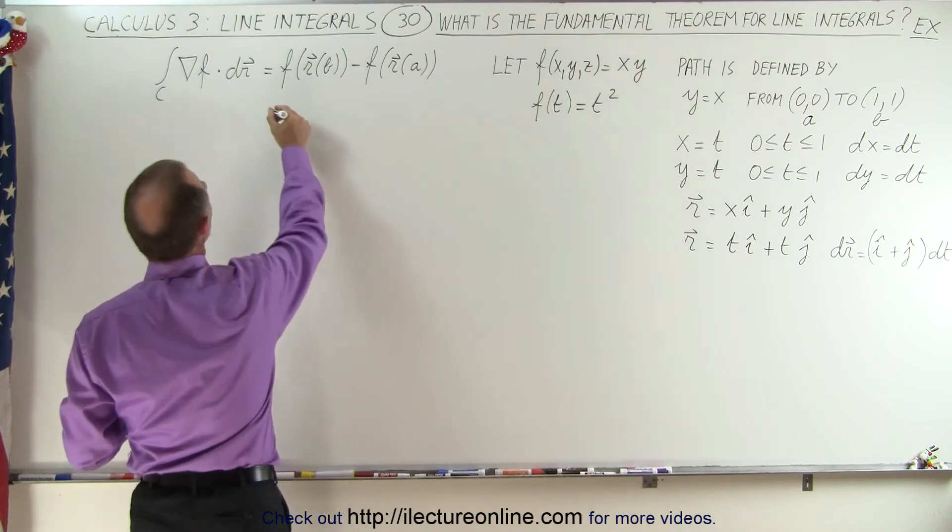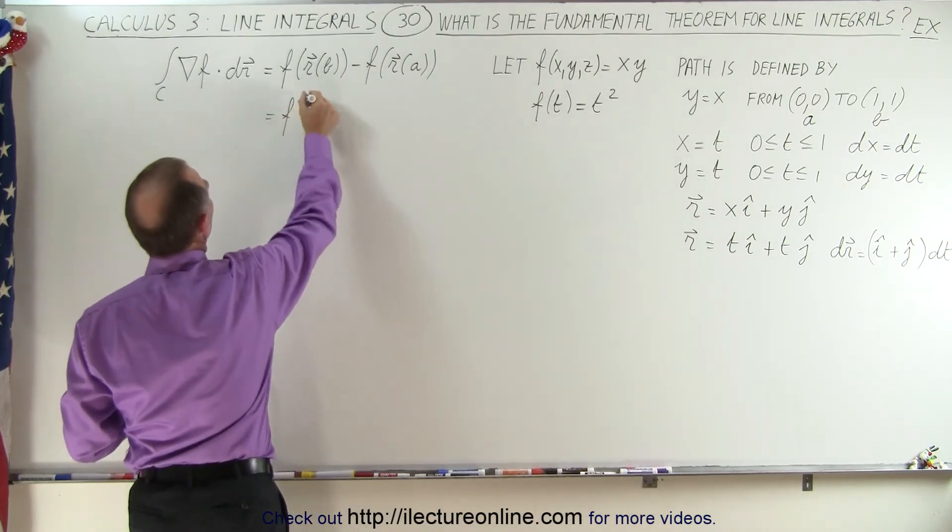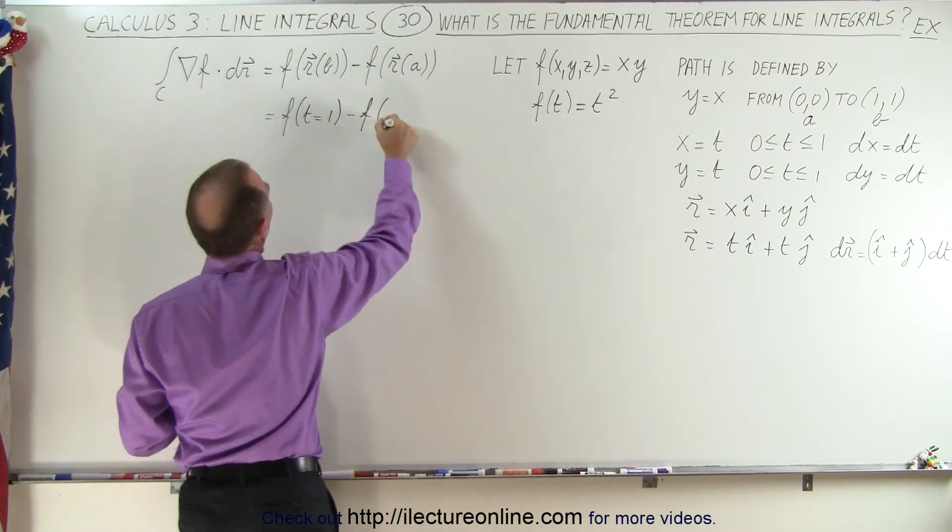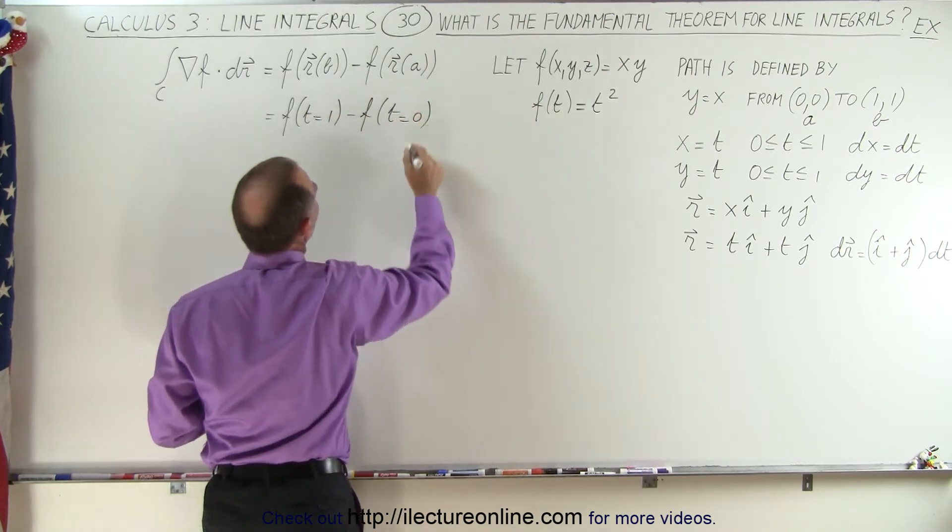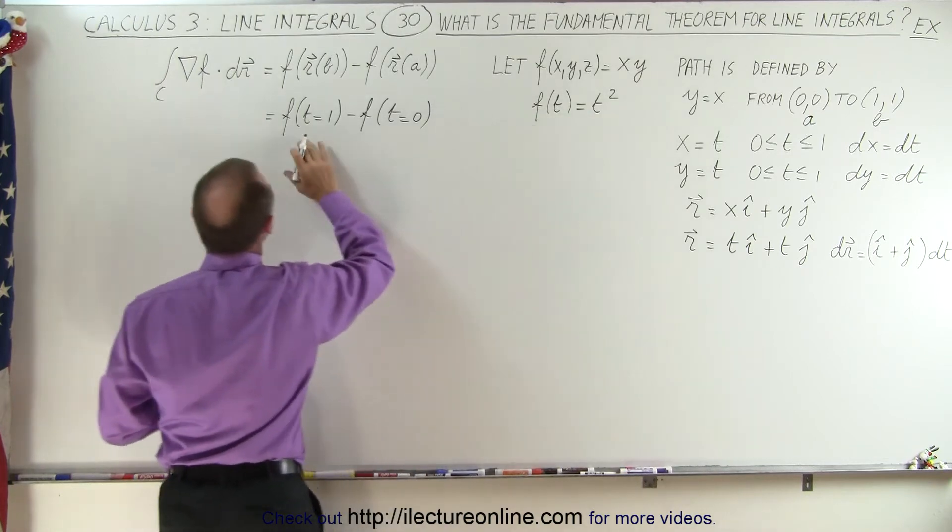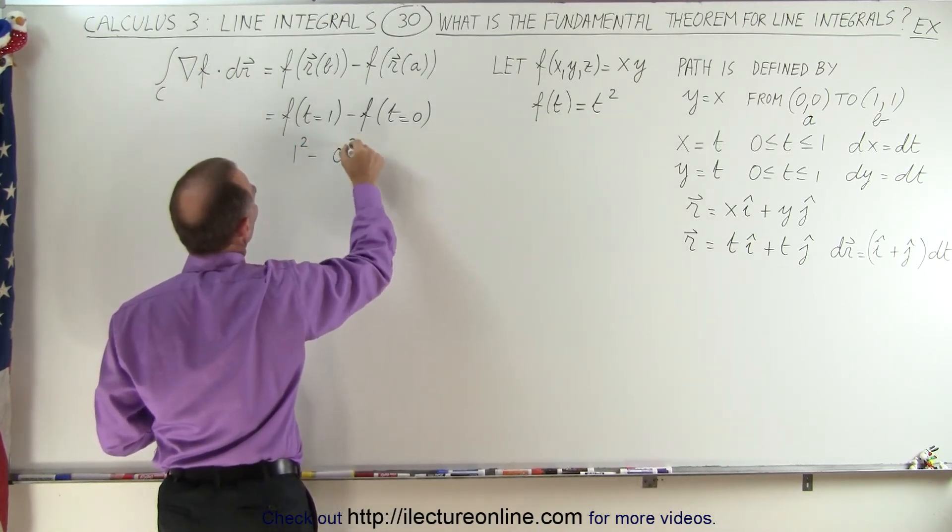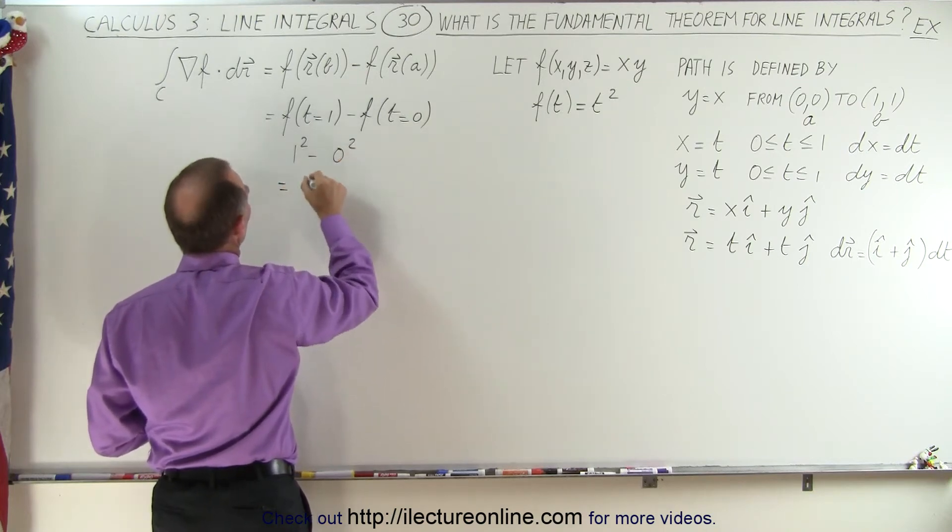So this can now be written as the function evaluated at t equals 1 minus the function evaluated at t equals 0. And since the function is equal to t squared, then we can say that this is equal to 1 squared minus 0 squared, which is equal to 1.